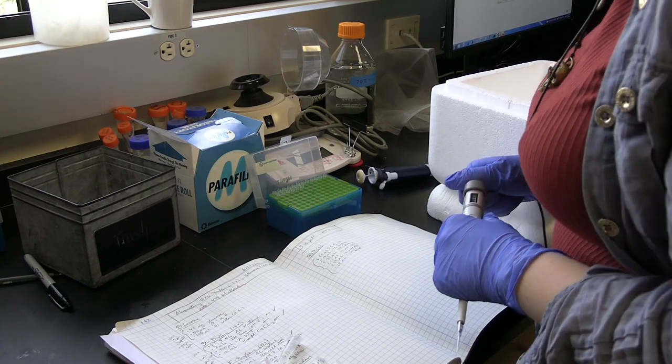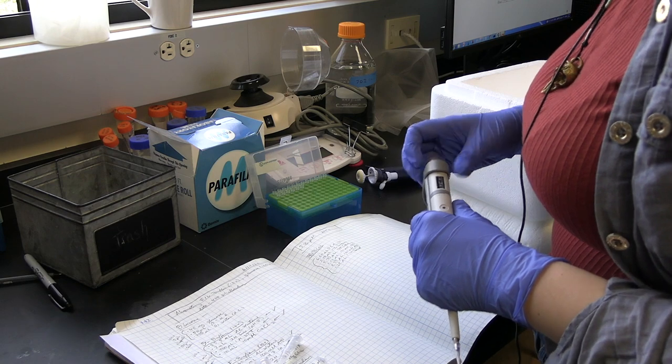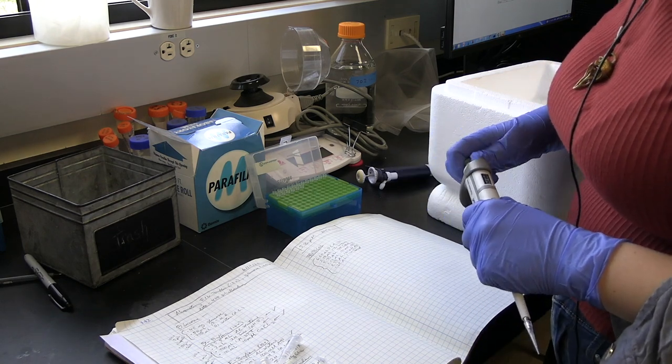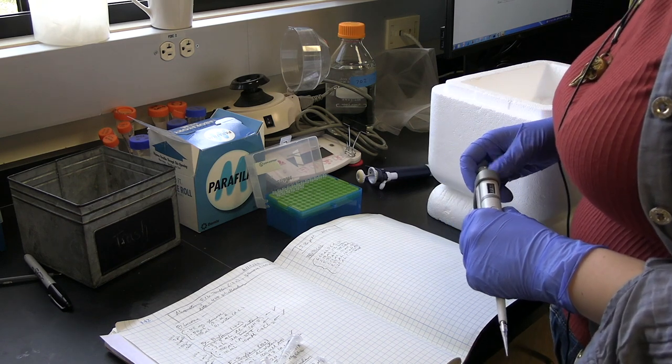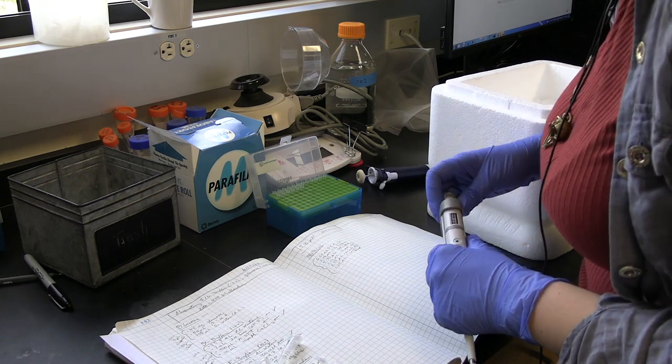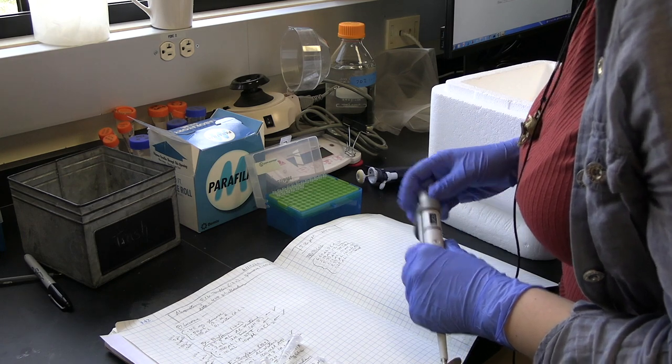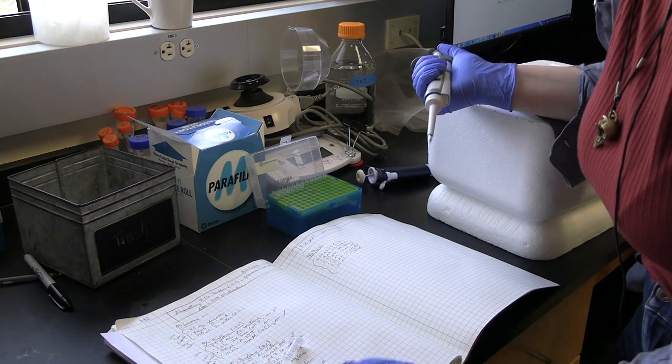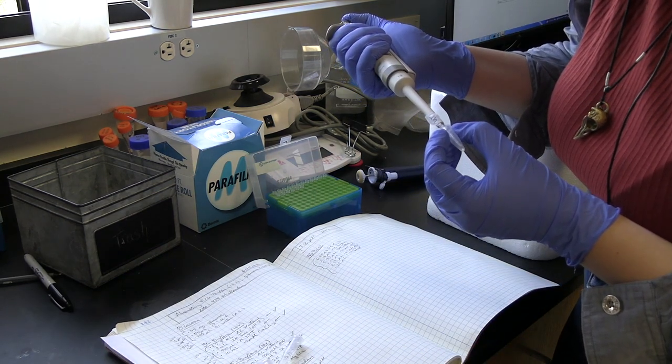Next thing we're adding is 8.33 microliters of 100 millimolar ATP. Technically you don't need ATP to polymerize microtubules. We generally add it in before polymerization so that if you have actin in our network, the actin will polymerize, and it's also going to drive the kinesin motors in our network. Adding the ATP very gently.